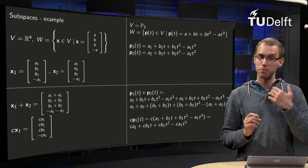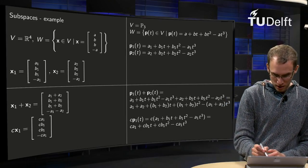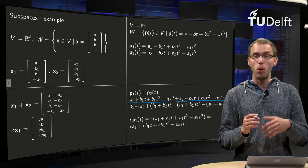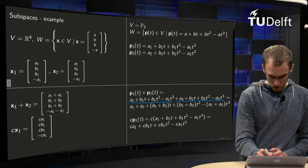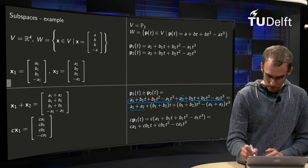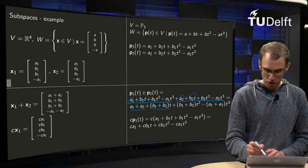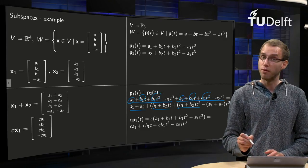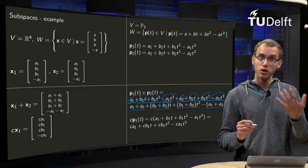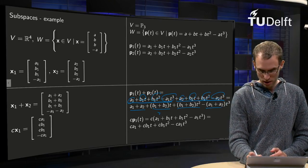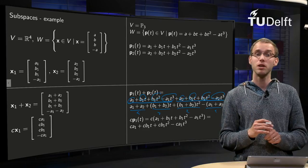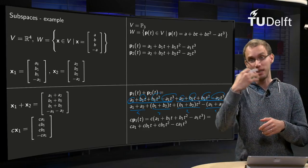What happens if we add P1 and P2? We add them up and collect terms. The constant terms give A1 + A2, the t-terms give (B1 + B2)·t, the t²-terms give (B1 + B2)·t², and the t³-terms give -(A1 + A2)·t³. The t and t² coefficients are the same, and the constant and t³ coefficients are the same up to sign, so the sum of the polynomials is again in W.